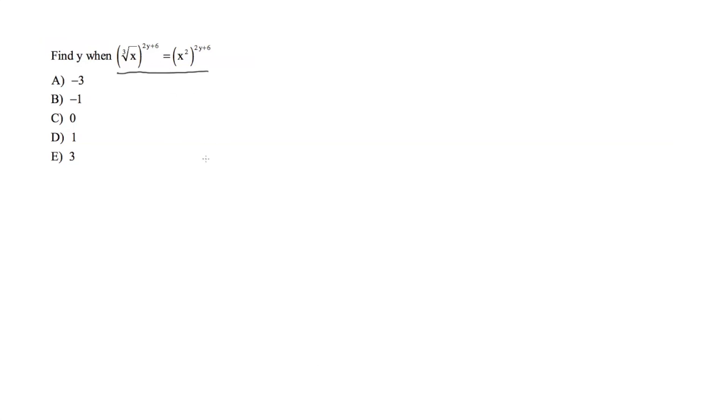So the cube root of x is x to the 1/3rd. That whole thing is raised to the 2y plus 6, and this is equal to x squared, which equals 2y plus 6. Now what we want to do is multiply these two using exponent rules.